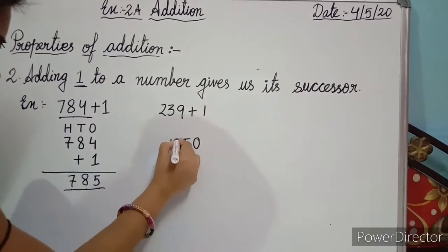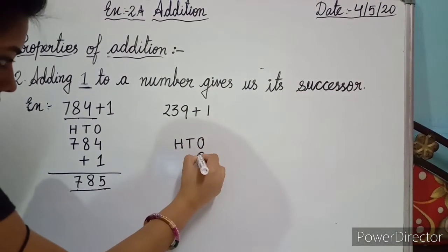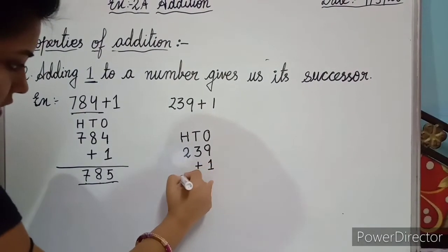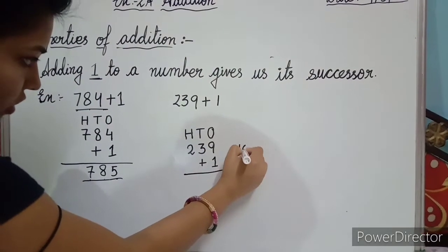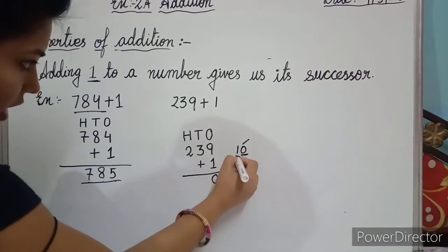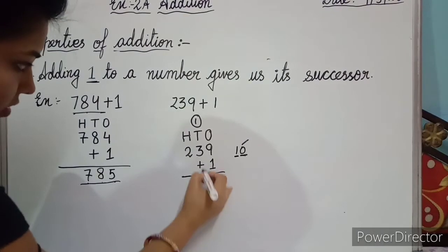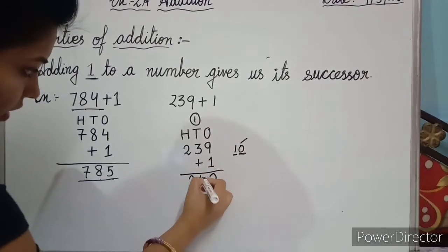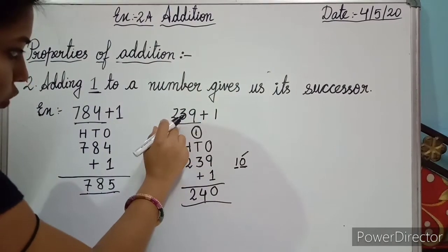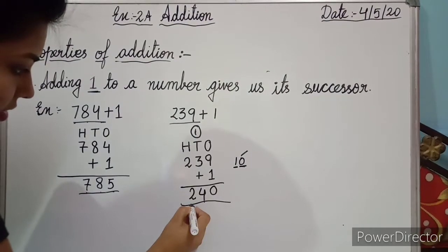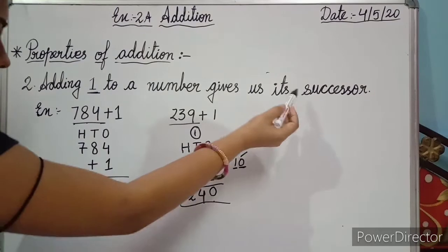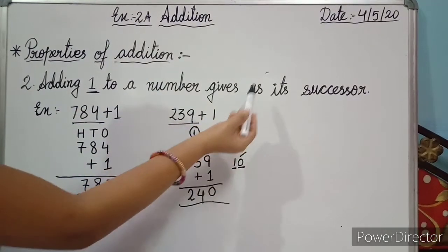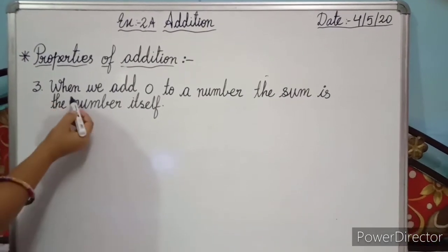Adding 1 to a number gives us its successor. Here is another example: 239 plus 1. We arrange in ones, tens, hundreds: 9, 3, 2, and place 1 in the ones column. 9 plus 1 is 10, so we put 0 and carry 1. Then 3 plus 1 carried is 4, and 2 remains. So the answer is 240. The successor of 239 is 240.